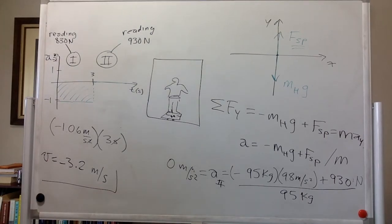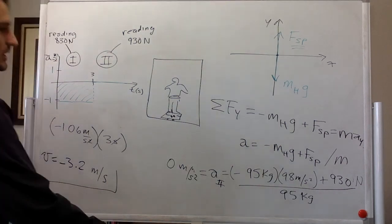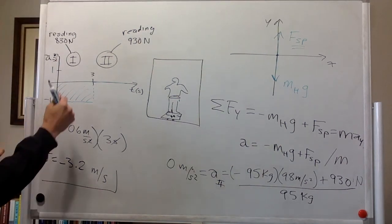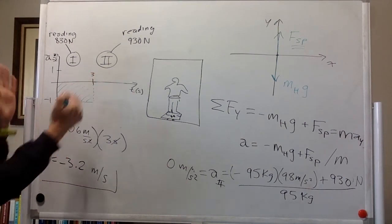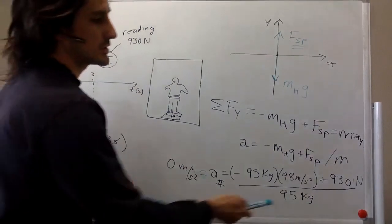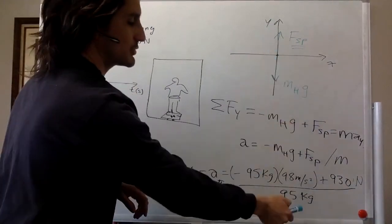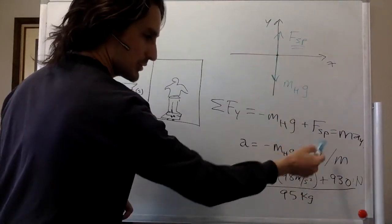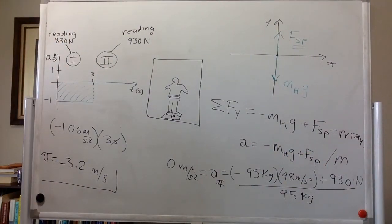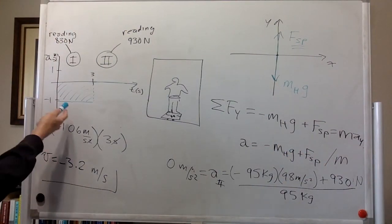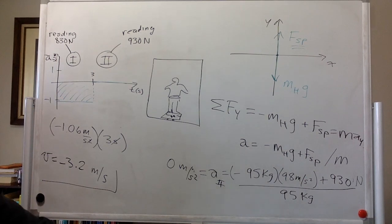So that is the answer we were looking for. The important thing to notice is that only one quantity changes between the sections — the spring force reading — so you don't have to redo the whole problem; just replace the appropriate value in your equations. I hope you liked it. Thank you.